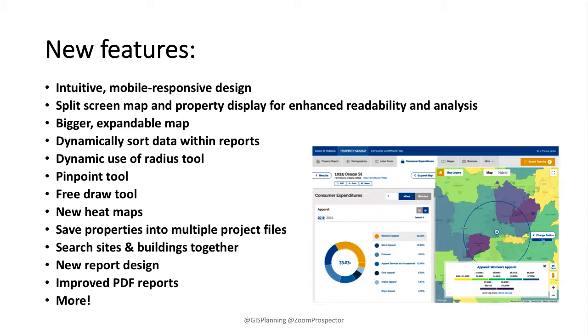One of the things that you'll notice is that we have moved to a side-by-side split screen map, so you have the map — Google Maps on one side and property display on the left. The idea here is really to follow best practices. You see this on Airbnb, you see it on Zillow — that side-by-side map and results is really critical, and makes it easier to read and easier to research.